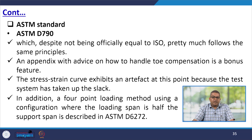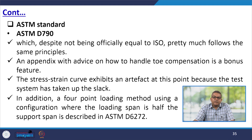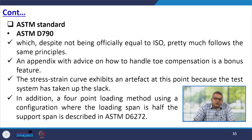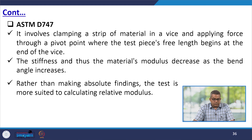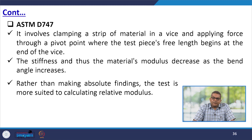Regarding ASTM standards — ASTM D790, despite not being officially equivalent to ISO 178, pretty much follows the same principle. An appendix with advice on how to handle toe compensation is a bonus feature; the stress-strain curve exhibits an artifact at this point because the test system has taken up the slack. In addition, a four-point loading method using a configuration where the loading span is half the support span is described in ASTM D6272. ASTM D747 involves clamping a strip of material in a vice and applying force through a pivot point where the test piece free length begins. The stiffness and thus the material's modulus decrease as the bend angle increases, so the test is more suited for calculating relative modulus rather than making absolute findings.